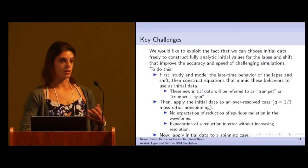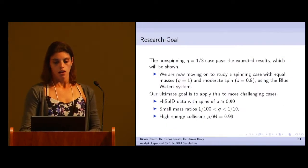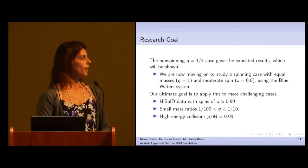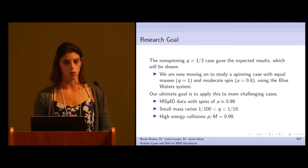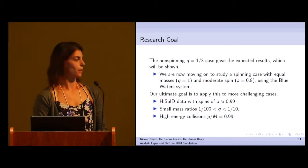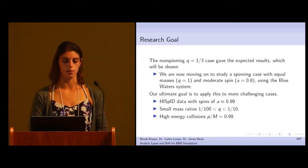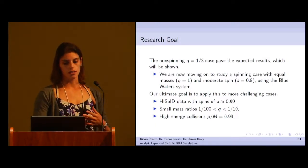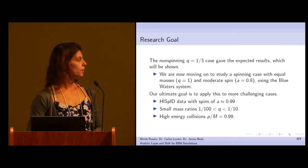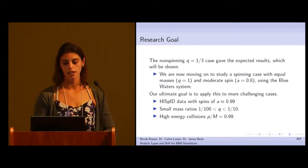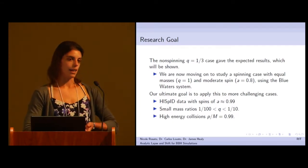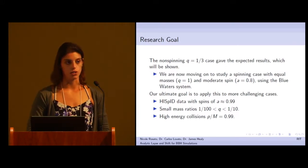Now I want to apply these initial data to a spinning case. Since we found good results with the 1 to 3 mass ratio case, we're now moving on to study a case with more moderate spin. We picked an equal mass system, which is Q equals 1, and a moderate spin, A equals 0.8. We're going to do these runs on the Blue Waters system. Our ultimate goal is to apply this initial data set to a more challenging case with a spin of 0.99 or small mass ratios of 10 to 100 or high energy collisions. We can do all of these simulations, but it would be great to gain accuracy in them without actually having to increase the computational expense.